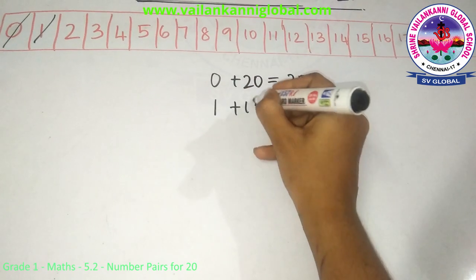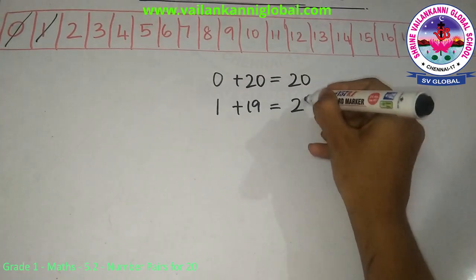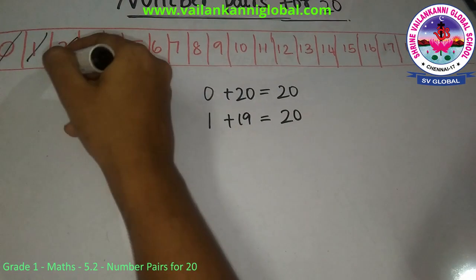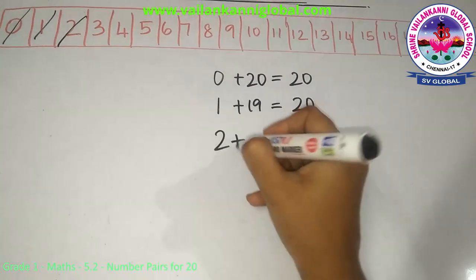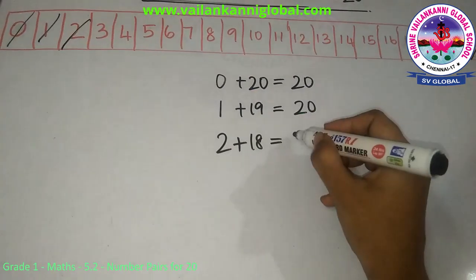2 plus 18, so 2 plus 18 when I add it gives me 20.